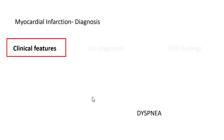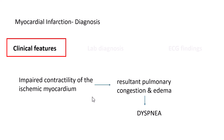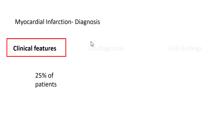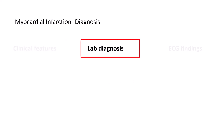Patients can also manifest with dyspnea — difficulty in breathing — because of impaired contractility of the ischemic myocardium, which results in pulmonary congestion and edema, causing respiratory difficulty. In around 25% of patients, the onset of myocardial infarction can be absolutely asymptomatic. Usually these patients are chronic diabetics in the setting of diabetic neuropathy.